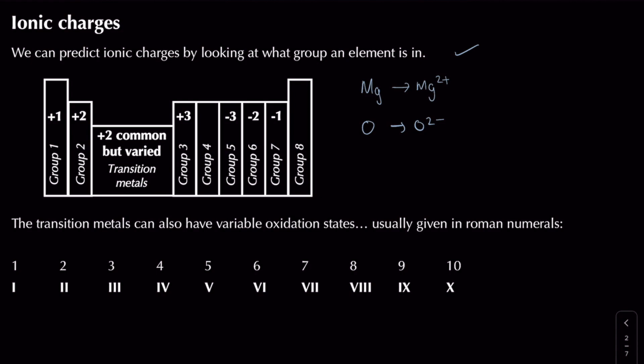You might have noticed I skipped out three areas on the periodic table. First, the noble gases - they already have a full octet, so they don't lose or gain any electrons. We also skipped group 4, which doesn't typically form ions. And finally the d-block elements - these actually have variable oxidation states, meaning you can end up with different charges for their ions.